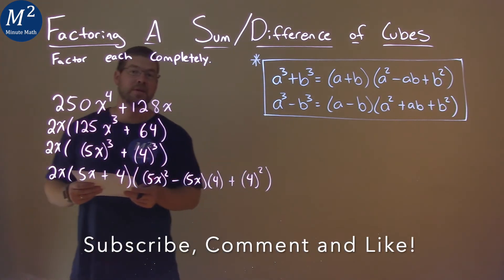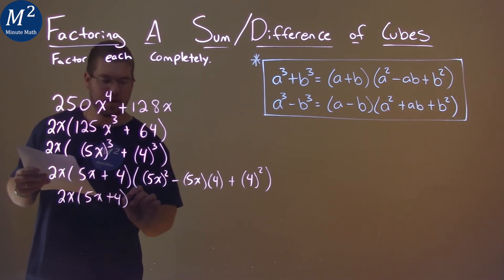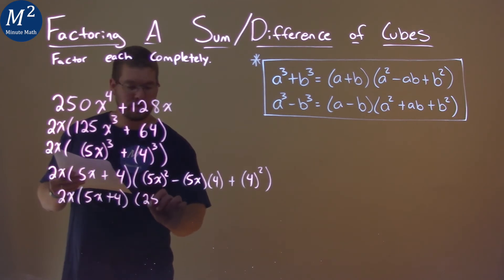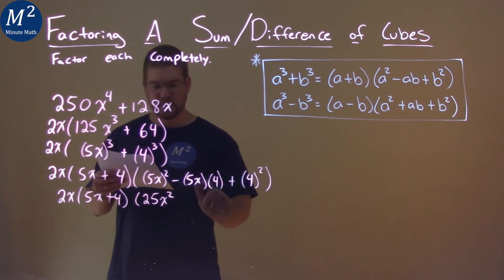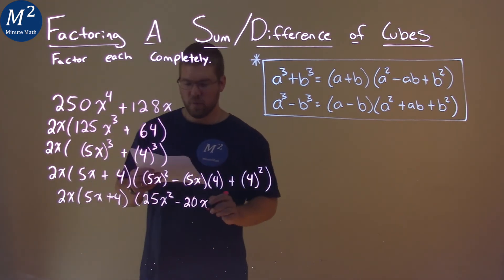So now we want to simplify. 2x here stays on the outside, we have 5x plus 4, and it just comes down. 5x all squared is 25x squared. 5 times 4 is 20, so we have minus 20, and don't forget the x. And then 4 squared is 16.